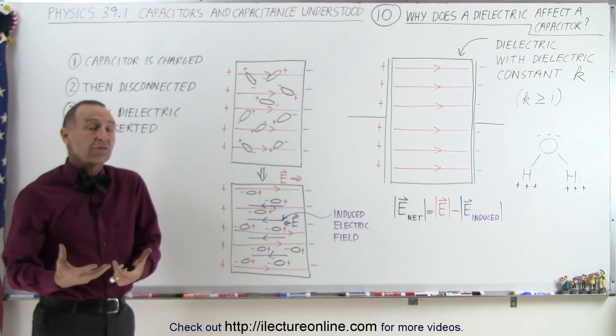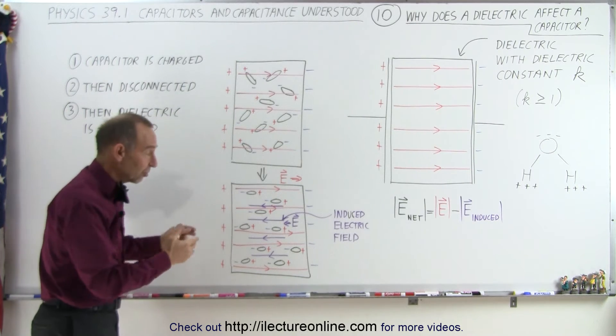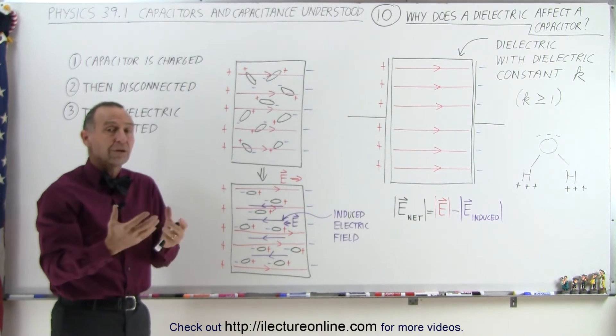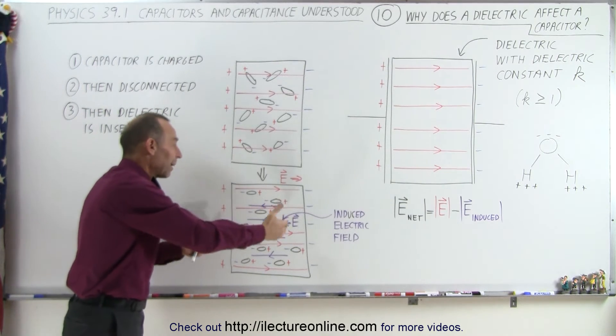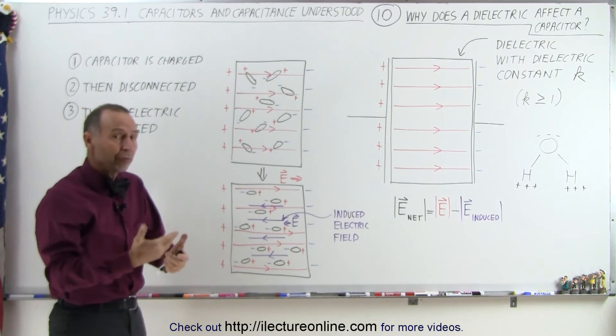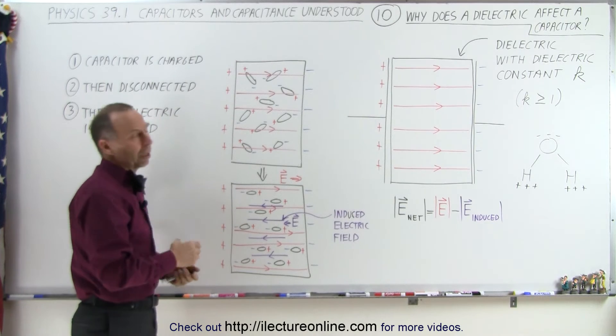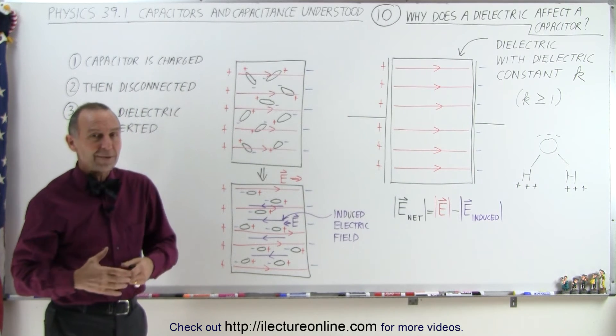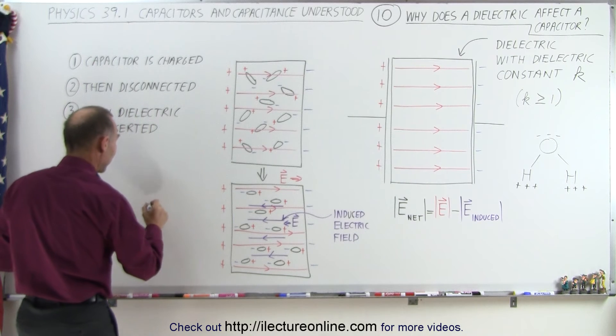Less interaction means when you try to push more charges onto a capacitor, there's less pushback. And so, therefore, the same amount of voltage should be able to load more charge onto the capacitor once there's a dielectric in there, which means more charge over less voltage means a bigger capacitor, one that has more capacitance.